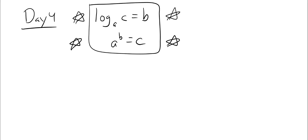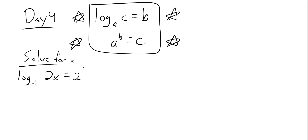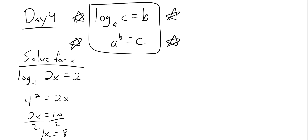Let's start with a couple of friendly problems. If log base four of two x equals two — all these problems are solved for x — you write it as an exponential: four to the second power equals two x. Four squared is sixteen, so two x equals sixteen, divide by two, and x equals eight.